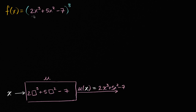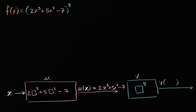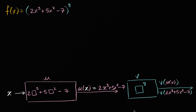Now what's the next thing you're doing? You're not done evaluating f of x yet. You would then take that value and input it into another function — you would take the eighth power of that value. Let's call that function v. Whatever input you give it, you're going to take it to the eighth power. So you end up with v of u of x, which is two x to the third plus five x squared minus seven, all of that to the eighth power.